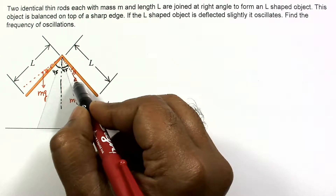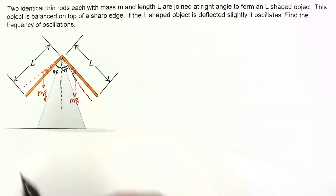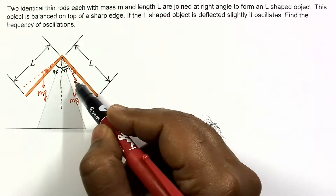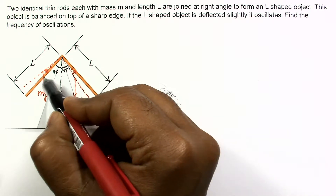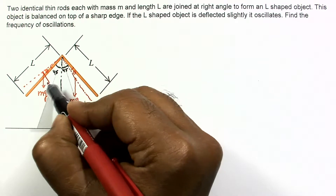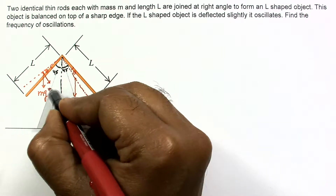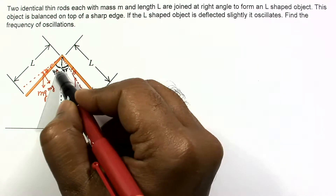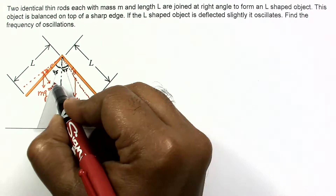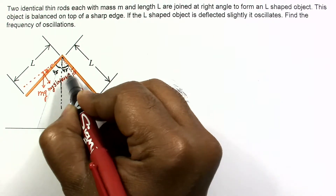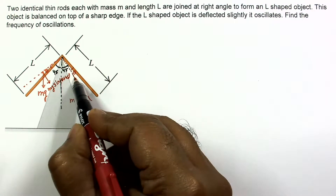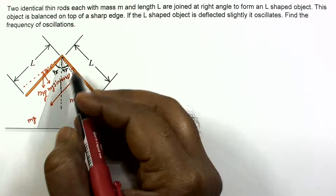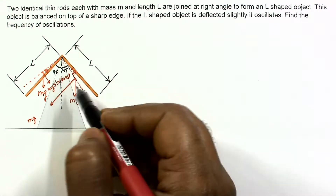Let us consider the torques of these two mg forces about this point. The distance will be L by 2, and the component of mg will be mg multiplied by sin(theta + 45). This total angle becomes theta plus 45. The other component will be mg multiplied by sin(45 minus theta).